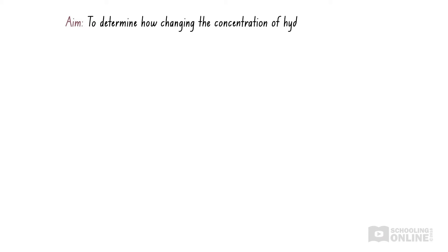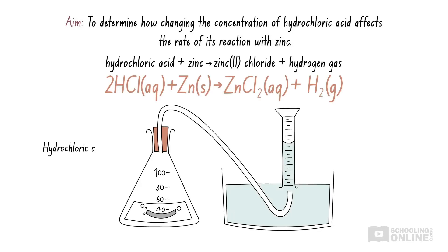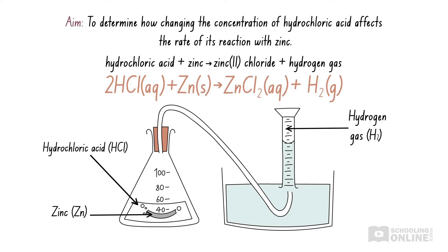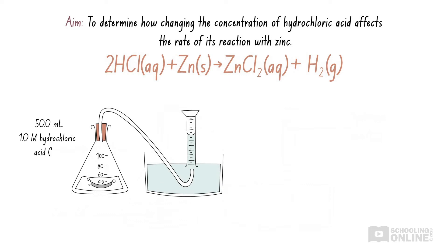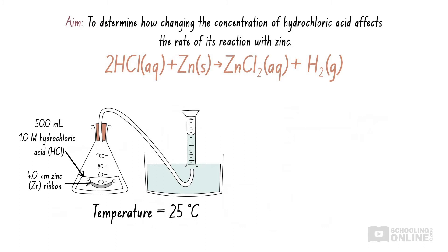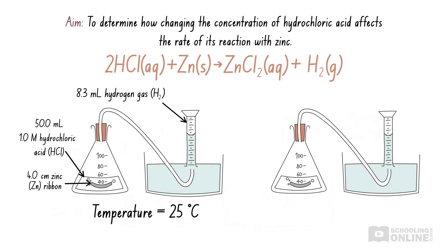Let's see how this applies to chemistry. Suppose we perform an experiment to determine how changing the concentration of hydrochloric acid affects the rate of its reaction with zinc. Hydrochloric acid reacts with zinc to produce zinc chloride and hydrogen gas. We pour 50 millilitres of 1 molar hydrochloric acid into a conical flask at 25 degrees Celsius, then add a 4 centimetre length of zinc ribbon. The reaction produces hydrogen gas, which displaces water in a measuring cylinder. We let the reaction proceed for 10 seconds and record the volume of hydrogen gas produced.